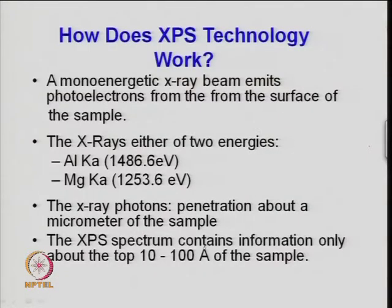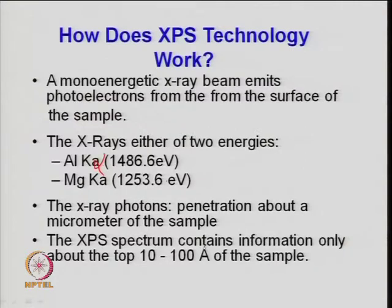How does XPS work? There is a monochromatic energy beam of different energy depending on the source — for example, aluminum Kα radiation or magnesium Kα radiation. These are mono-energetic X-ray beams that emit photoelectrons from the surface of the sample. Roughly 1.486 keV for aluminum Kα and 1.253 keV for magnesium Kα. These energy beams are generally used for X-ray photoelectron spectroscopy and the measurements are done under high vacuum.